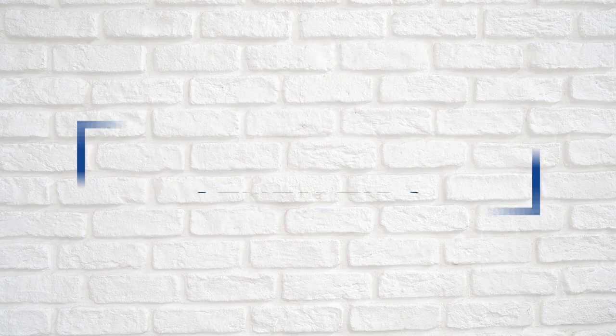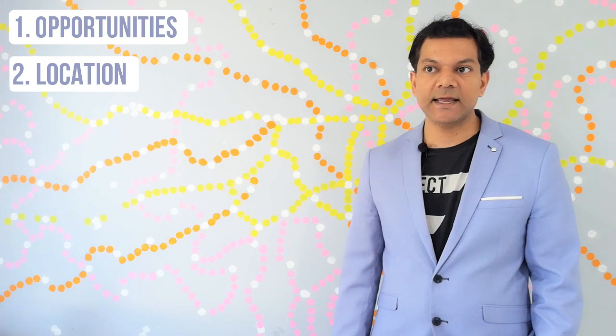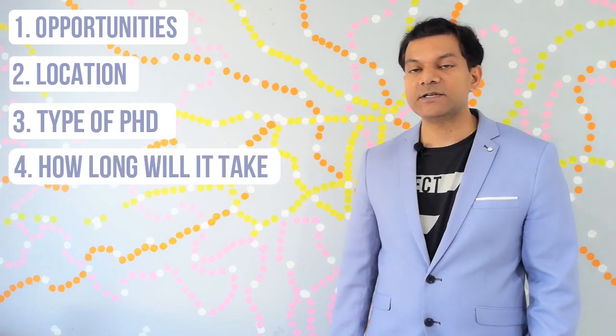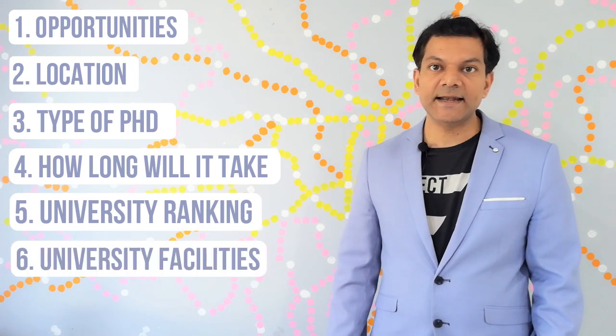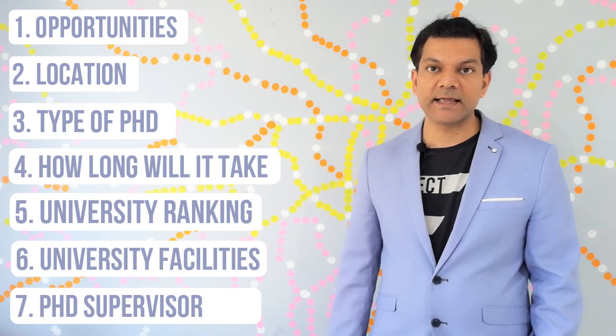These are my seven tips on deciding where to do your PhD. Keep in mind and follow the order. Look for which university will give you the best opportunities, what is the location where you want to study, what type of PhD you want to do, how long is it going to take, what is the ranking of the university.